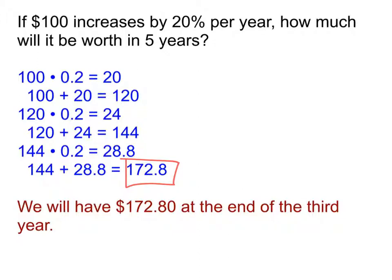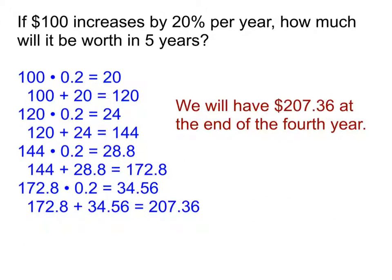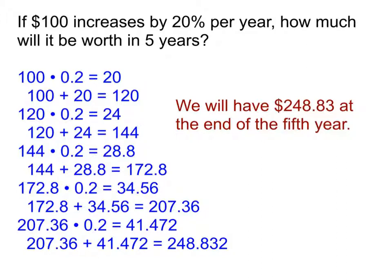But we're wanting to figure out what it is at the end of the fifth year, so we have to go one or two more. Here's our fourth year. And notice, at the end of the fourth year, we have $207.36. That's already more than we got from having five years at $20 a year. But if we go ahead and take this out to the fifth year, this is what we end up looking at.